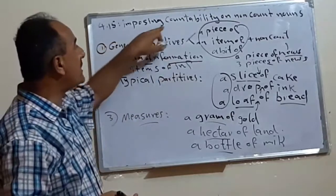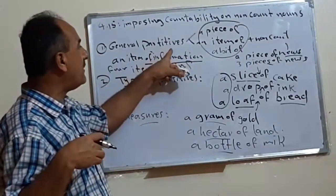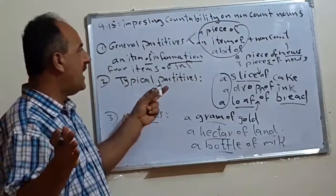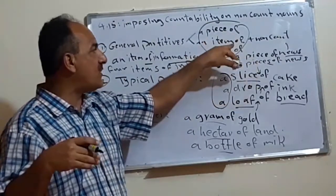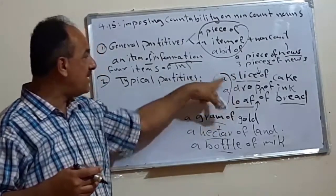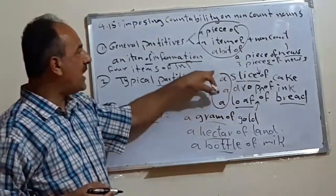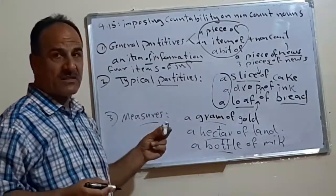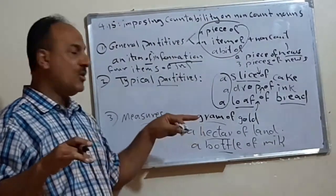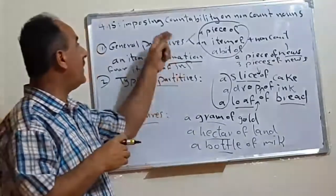This is the way how to impose countability on non-countable nouns. Means we divide them into parts. Either, according to general partitive, means we can use these, a piece of, an item of, a bit of, with most non-count nouns. And if we want to make them plural, we put s to the piece, or item, a bit, after deleting this a or an. The second time is typical. Means we choose the part, partitive. We choose the part according to the type of the noun. So, and the same plural, the same thing, or the same procedure with the plural. And finally, we have measures. Measures that we use the unit for each noun. As we said, for example, centimeter, or centimeter cubic, or a gram, or tongue, or bottle, or et cetera. So, this is how do we divide, how to deal with the uncountable nouns.